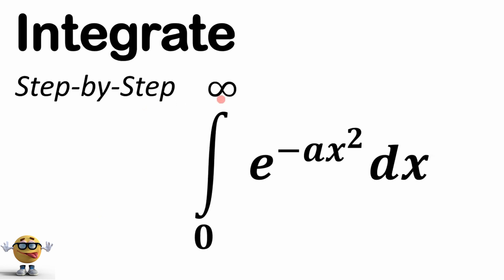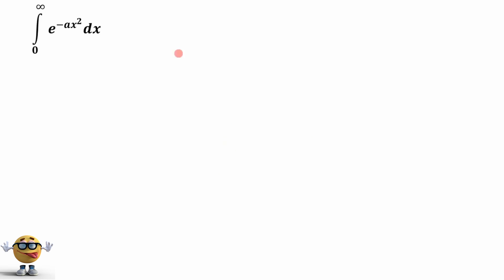Alright my friends, we're going to integrate this Gaussian integral right here: e to the negative ax squared from zero to infinity. I have many modifications of this integral that I've posted — you can check those out.